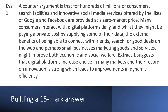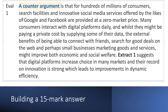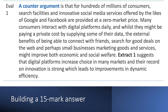The second paragraph needs to evaluate the first. A counter-argument is — that's a nice bridging phrase that tells the examiner you're evaluating — that hundreds of millions of consumers get search facilities and innovative social media services offered by the likes of Google and Facebook at zero market price. You don't pay for searching on Google or maintaining your social network on Facebook. Whilst consumers pay a private cost by supplying some of their data, the external benefits of connecting with friends, searching for good deals, and small businesses marketing goods and services might improve economic and social welfare. Extract 1 suggests digital platforms increase choice in many markets, and their record on innovation is strong, which leads to improvements in dynamic efficiency.